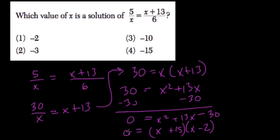Well, if this equals 0 and x is negative 15, this first term would equal 0, so x could be negative 15.